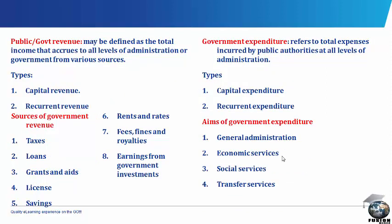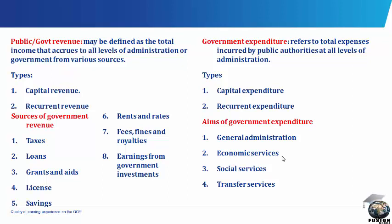Public or Government Revenue. This may be defined as the total income that accrues to all levels of administration or government from various sources. Types of Public or Government Revenue: there are two types — Capital Revenue and Recurrent Revenue. Capital Revenue consists of all revenues on development projects and government investment and securities, such as construction of roads and bridges, building of houses, and purchases of shares in venture companies. Recurrent Revenue is made up of all current revenue on items that are meant to be used or consumed within a fiscal year.